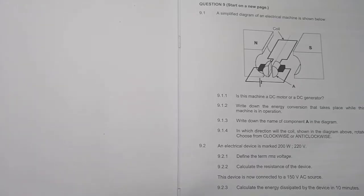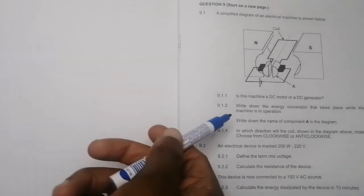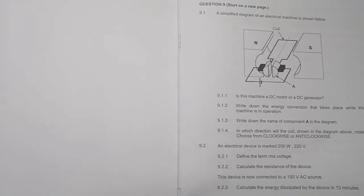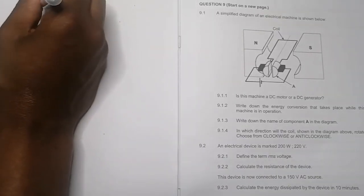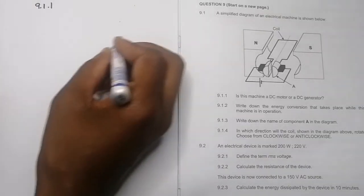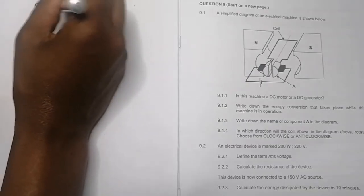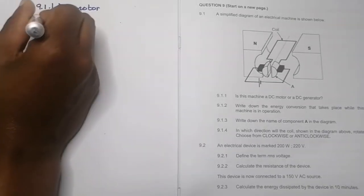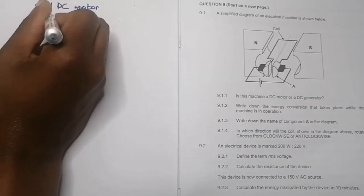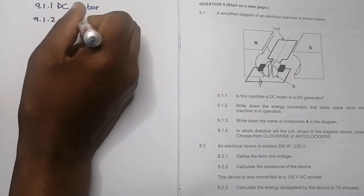They say write down the energy conversion that takes place whilst this machine is in operation. We're looking at converting electrical energy to mechanical energy. So this is a DC motor, and we are converting electrical energy to mechanical energy.